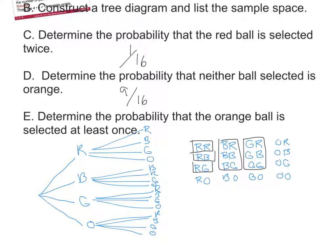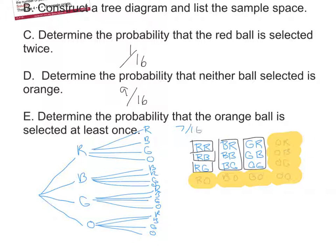Part E: Determine the probability that the orange ball is selected at least once. You can count through the sample space — there are 7 possibilities that include orange out of 16 total. You could also use the special formula for 'at least once': take 1 minus the probability of no orange balls, which we found in part D to be 9/16. So 1 minus 9/16 = 7/16, giving the same answer.